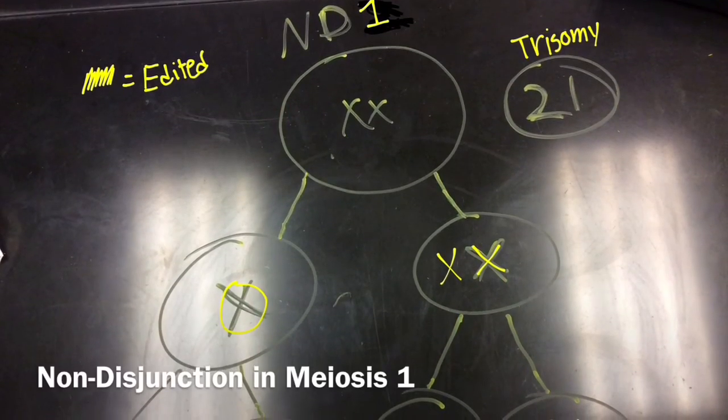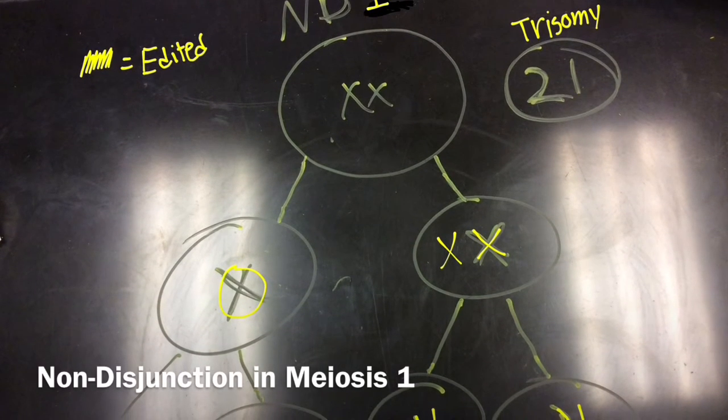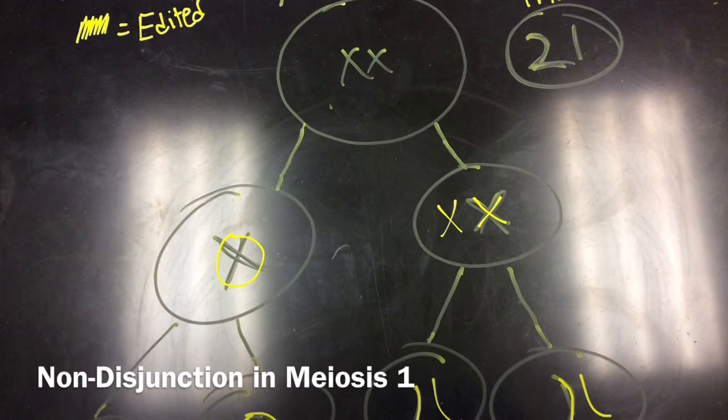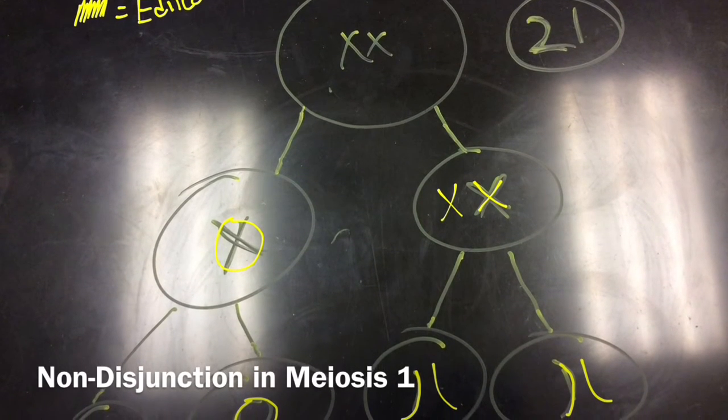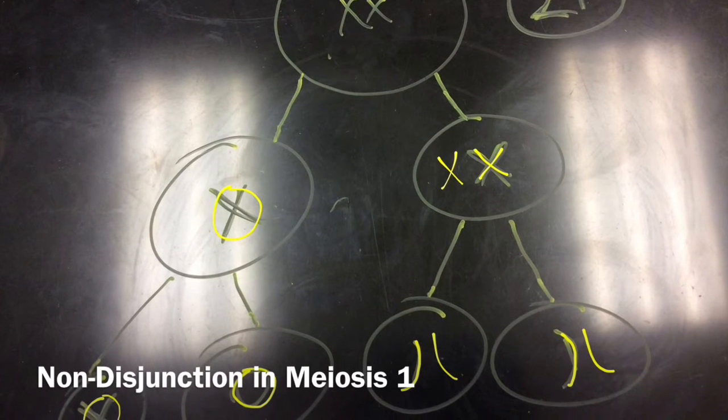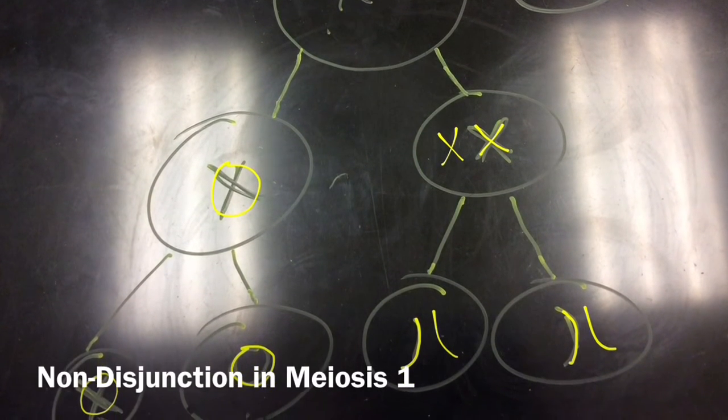A non-disjunction in meiosis I occurs when homologous chromosomes fail to separate properly during anaphase I. One gamete receives two of the same sort of chromosome and the other gamete receives no copy.